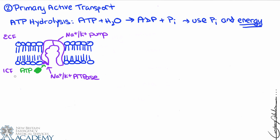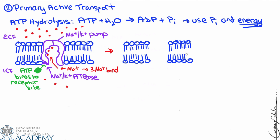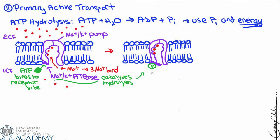ATP binds to the receptor site, then three sodium ions bind to their respective locations on the inside of the sodium-potassium pump. Once the three sodium bind, the sodium-potassium ATPase catalyzes the hydrolysis — breaking ATP into ADP and inorganic phosphate. The phosphate remains bound to the pump. The conformation of the protein at this point traps those sodium ions so they really can't escape.